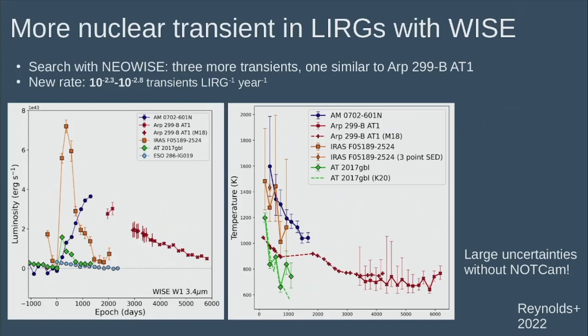We went looking for more with the NEOWISE survey. NEOWISE observes the whole sky every six months in 3.4 and 4.6 micron mid-infrared bands. We found three more transients in LIRGs. However, all we have are two mid-infrared points, so you can't really get good temperatures - you have a huge error bar because you don't have NOTCam.